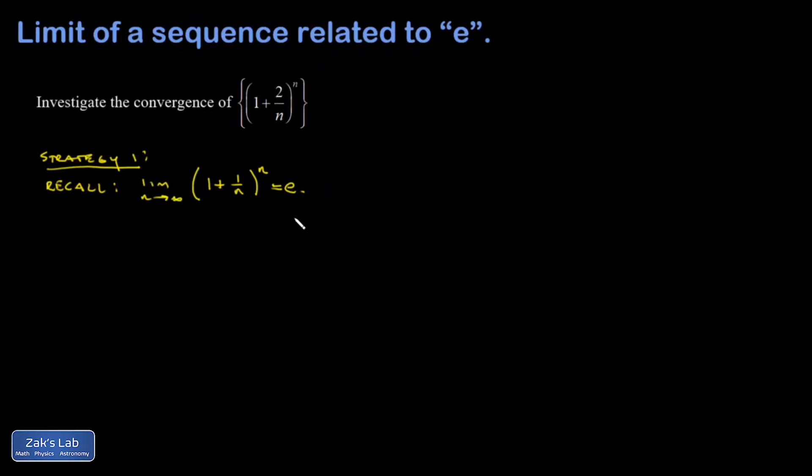So to figure this out, I'm going to make a substitution because I want to have a one over something here instead of a two over something. So my substitution will be let m equal n over two. And that means n, I'm going to have to sub this in this exponent, n is 2m. And as n goes to infinity, so does m.